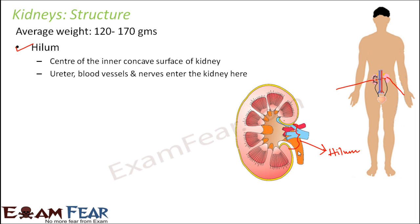The orange colored tube-like structure is the ureter, which enters the kidney at the hilum. The red color represents the artery and the blue color represents the vein. The arteries and veins also enter the kidney at the hilum, making it very important as it is where the kidney connects with all other parts of the body.